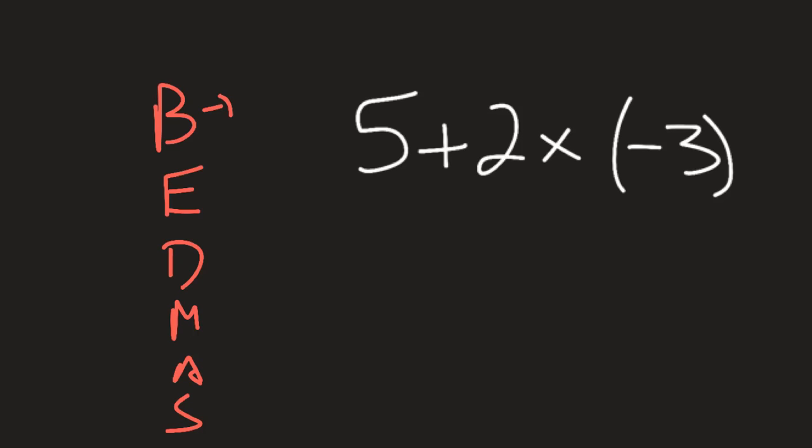BEDMAS: B is brackets, that's what we're going to be doing first. E is exponents. Sometimes I see it as BIDMAS for I for indices. Division and multiplication are looked at as equal, they're just kind of put together to make it make sense as an acronym, and addition subtraction as well.